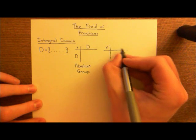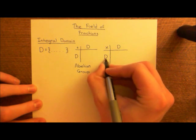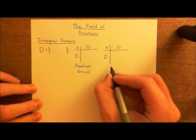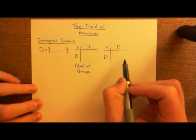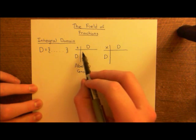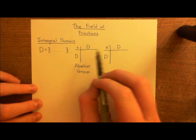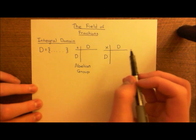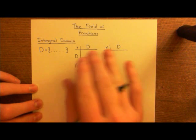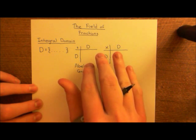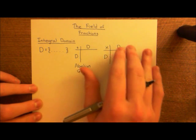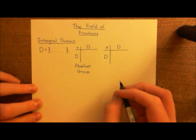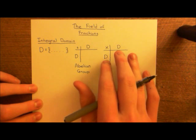Then you define a second operation on the set called multiplication. Again, you draw a table defining what every element multiplied by every other element is. This doesn't have to form a group structure — in fact, if it did, it wouldn't obey a more important property. The key thing is that we want some interaction between the two operations: distributivity.